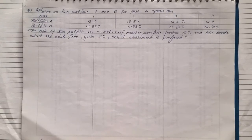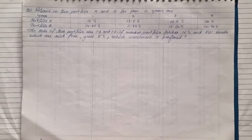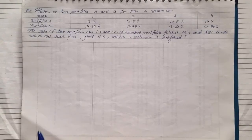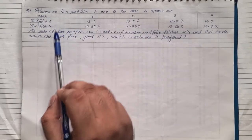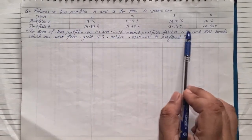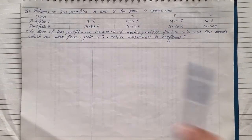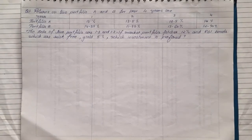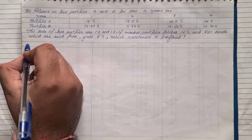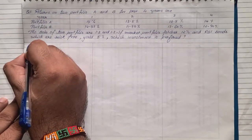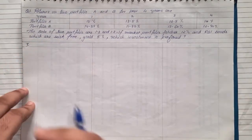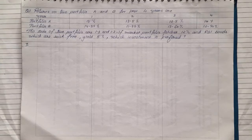This is the very first type of problem where they ask you to find the alpha. The question gives you the number of years and the returns of various portfolios, the beta, the market return, and the risk-free return, and asks you to find the alpha and determine which investment is better. The first step is to find alpha using Jensen's formula, which is based on two steps.